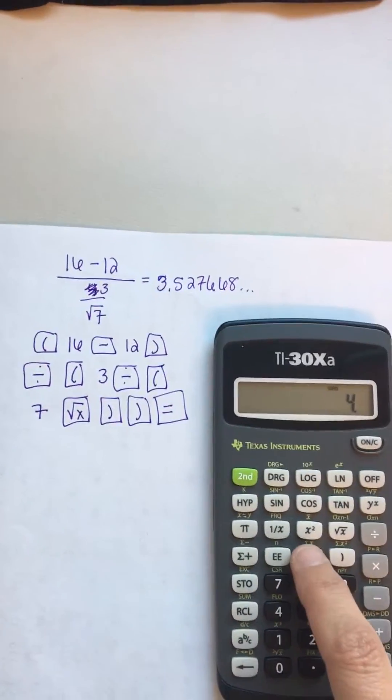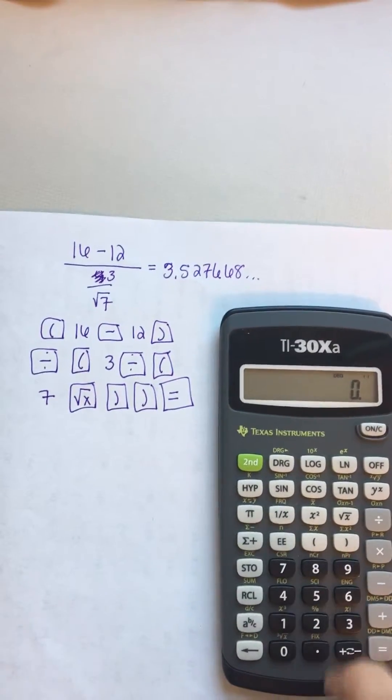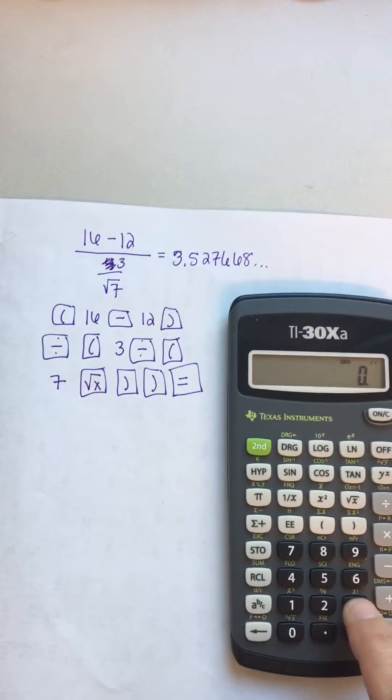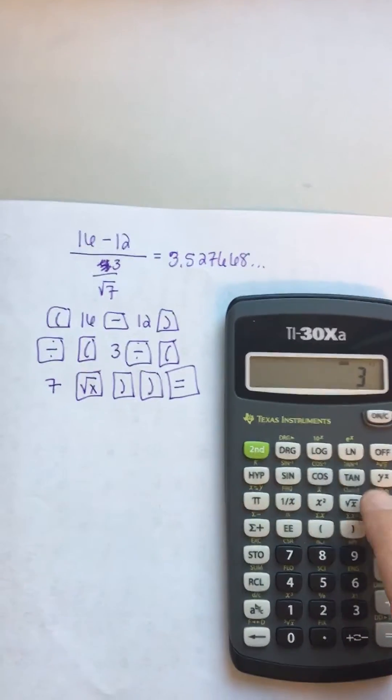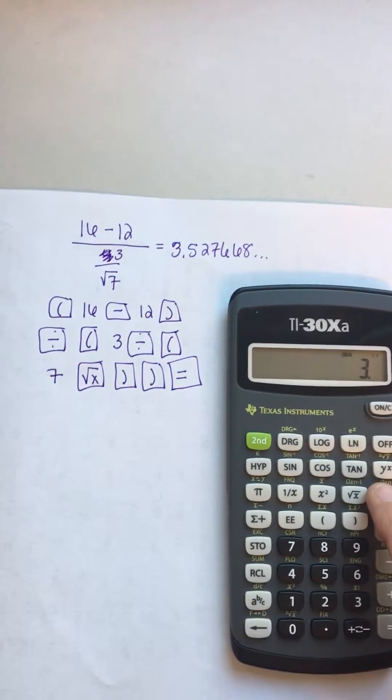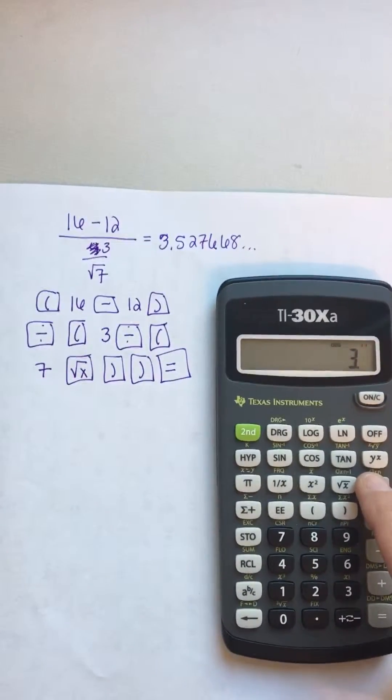Then you're going to divide and you want to do a parenthesis to start the denominator, the bottom, and then I do the 3 because that's the first part divided by. But on this calculator you have to put the 7 before the square root button.